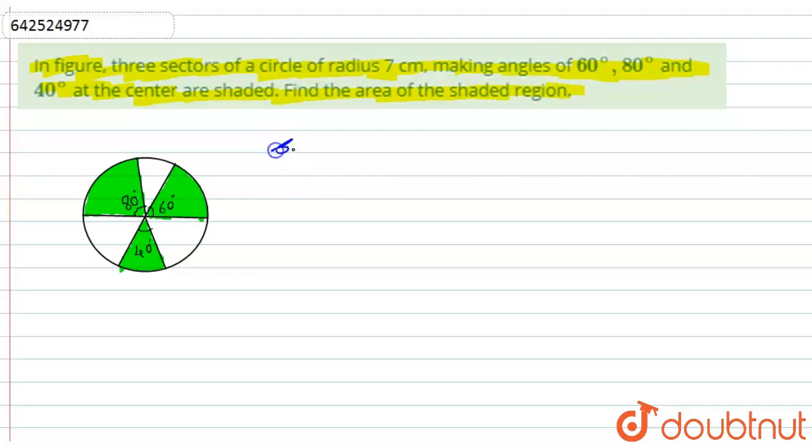So let us start with the solution. First of all, what is given to us? In the figure, three sectors with central angles 40, 60, and 80, and the radius of the circle is given as r equals 7 centimeters. What is asked to find? It is asked to find the area of this shaded region.